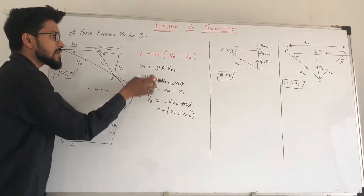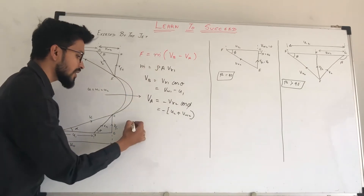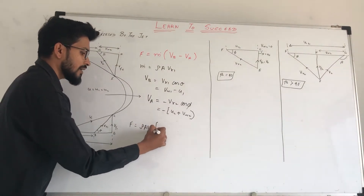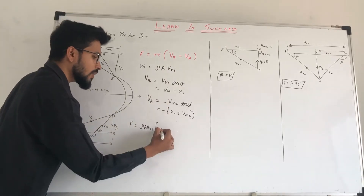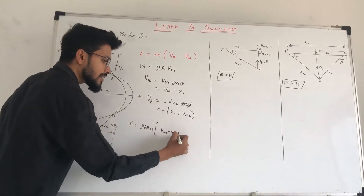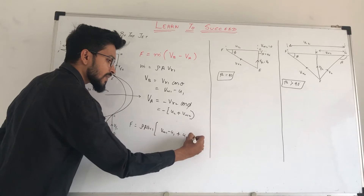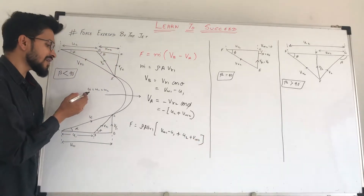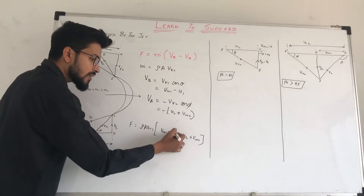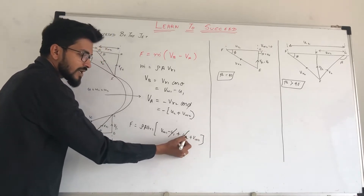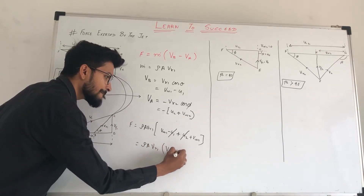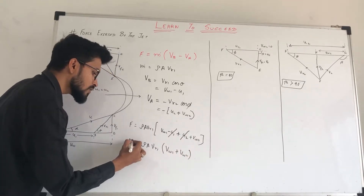Now we substitute these three values into our formula to get the final result. F equals M-dot times (VB minus VA), so F equals rho·a·vr1 in the bracket: VB is (vw1 minus u1), and minus of minus (u2 plus vw2) becomes plus (u2 plus vw2). We have assumed that blade velocity u1 equals u2, so u1 and u2 cancel, and our final formula becomes F equals rho·a·vr1·(vw1 plus vw2). This is the force exerted by the jet when beta is less than 90.